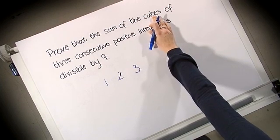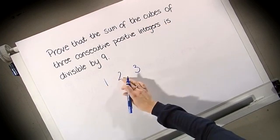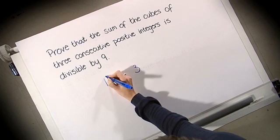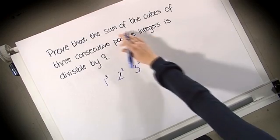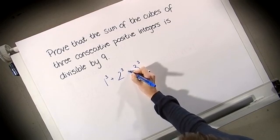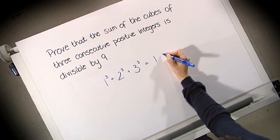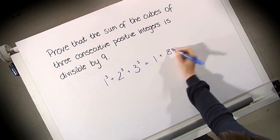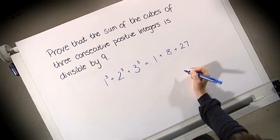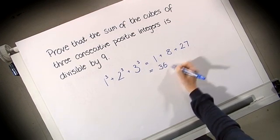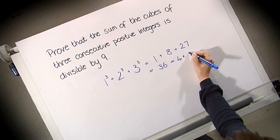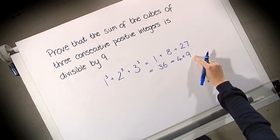I'm looking at the cubes of these numbers. So let us cube each of the integers. One cubed, two cubed and three cubed. And finally, I'd like to sum these cubes. So let us add them together. Now this gives me 1 plus 8 plus 27. Simplifying, we get 36. And 36 can be written as 4 times 9. So this is divisible by 9.